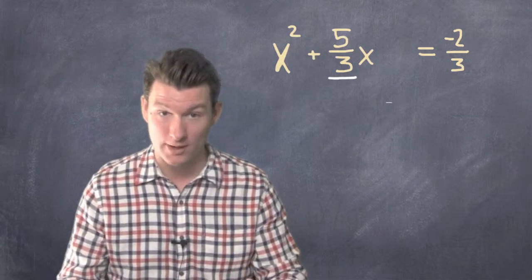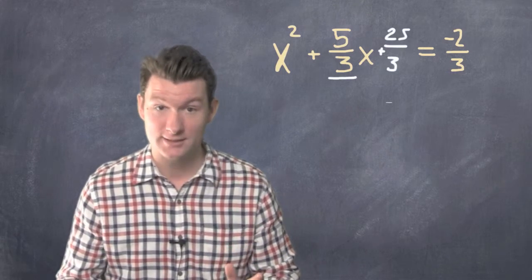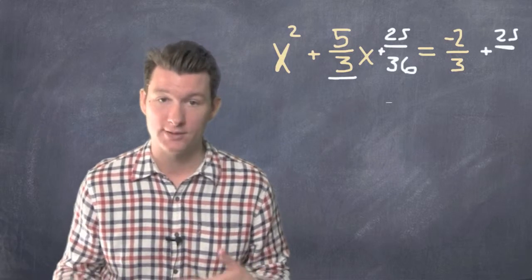So on the left side, you've got x squared plus 5 over 3x plus 25 over 36 equals negative 2 thirds plus 25 over 36.